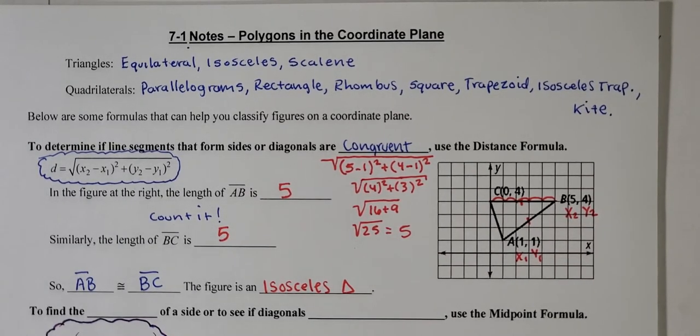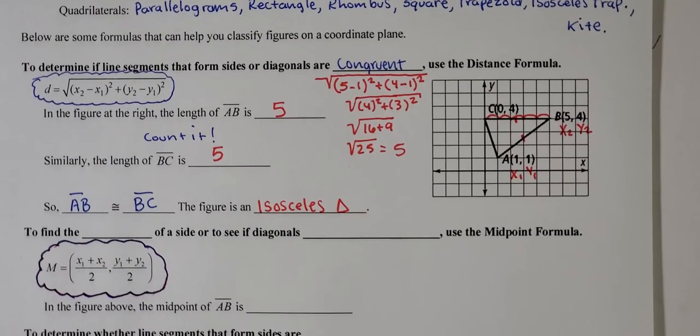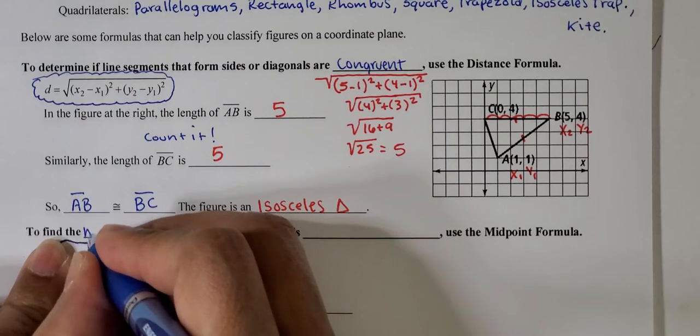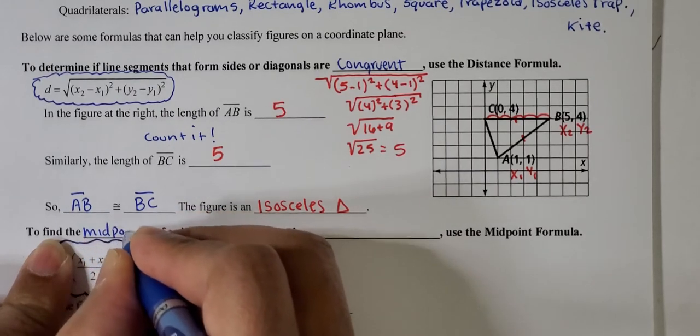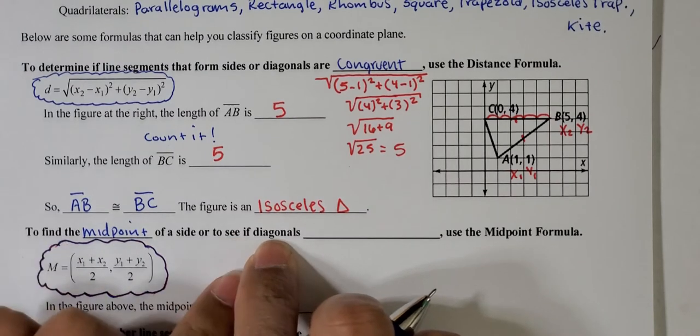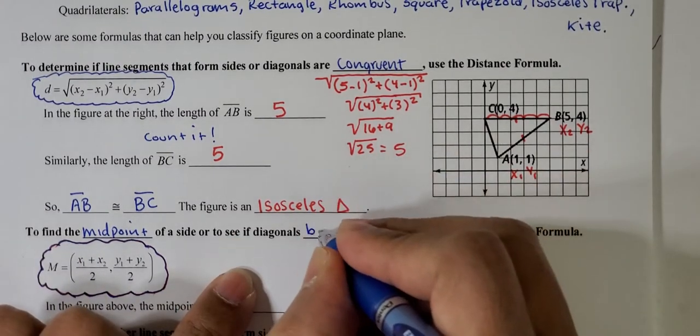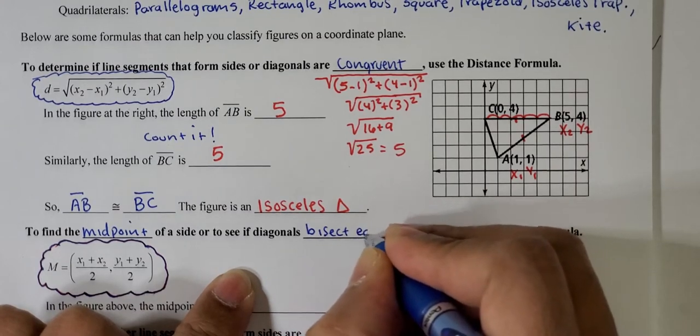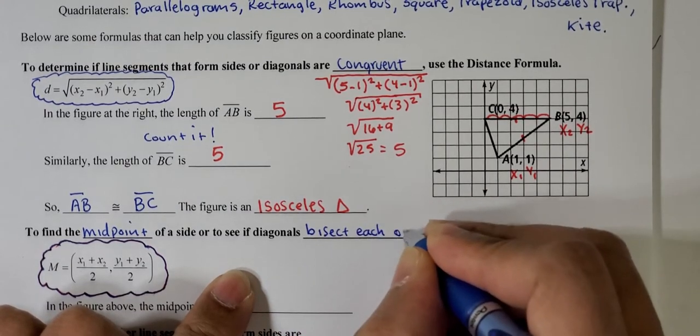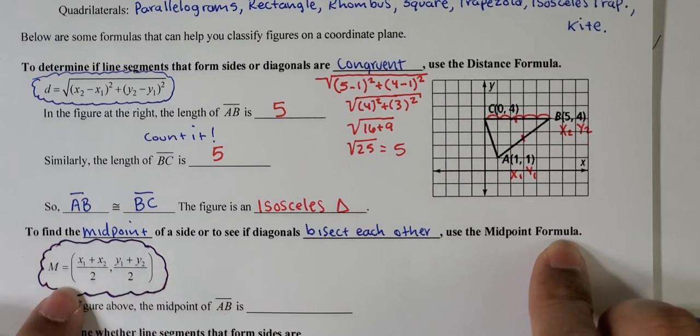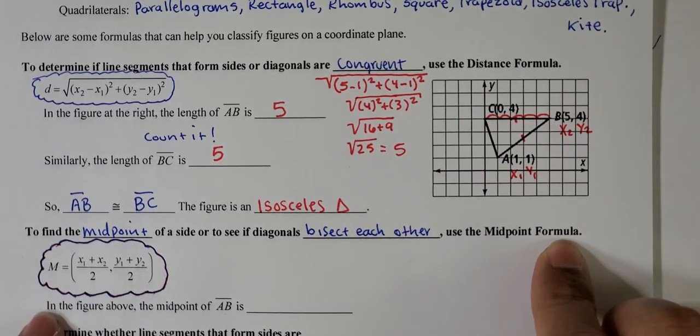Let's go on to the next section. To find the midpoint of a side, or to see if diagonals bisect each other, use the midpoint formula, so this is the midpoint formula.